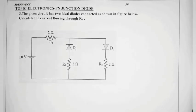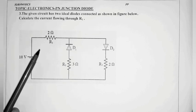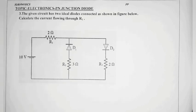Good morning students, in physics we will discuss the topic of electronics PN Junction Diode. The given circuit has two ideal diodes connected as shown in the figure below. Calculate the current flowing through R1.